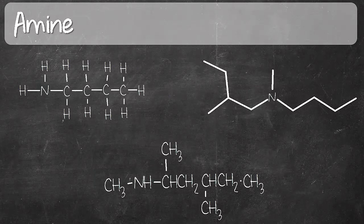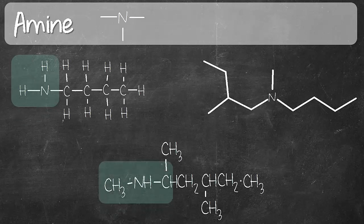Last but not least, we have amines — also not to be confused with amide. Amine is a nitrogen-containing compound. That nitrogen has three single bonds. An important fact to remember is that nitrogen in amine has to be connected to at least one carbon. Otherwise, if the nitrogen is connected to three hydrogens, that's actually called ammonia — it's not an amine. All three example compounds shown have a nitrogen with three single bonds.